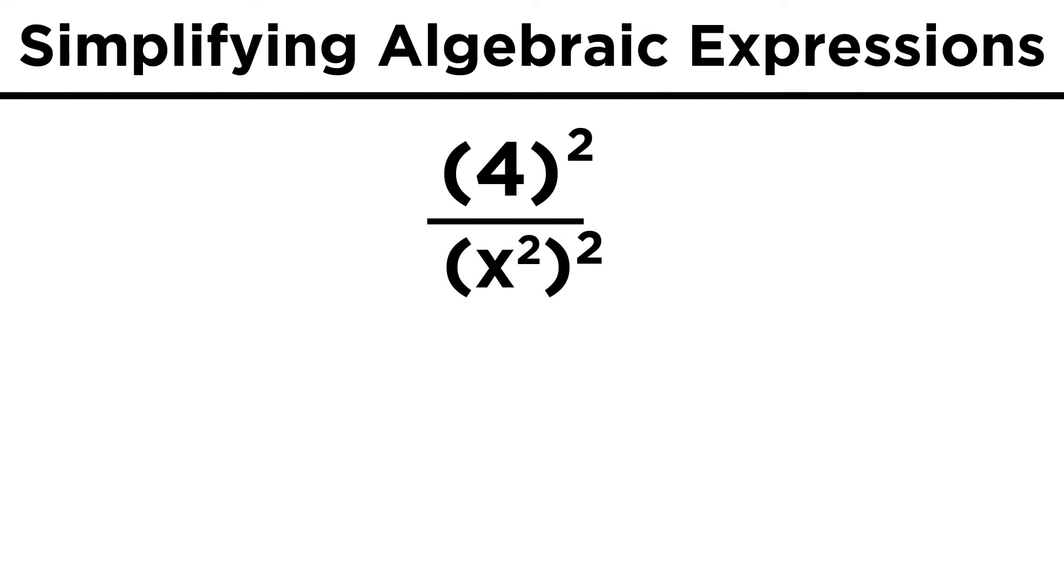That takes care of the denominator of the exponent, so now we just square the top and bottom. That leaves us with sixteen over x to the fourth, which can't be simplified further.